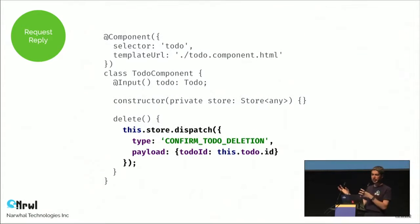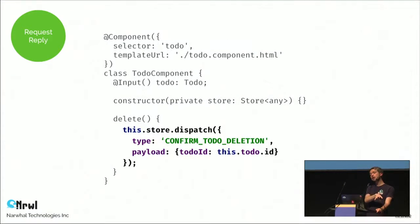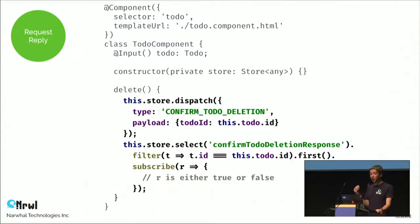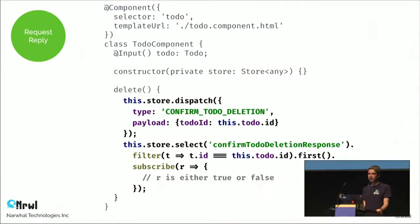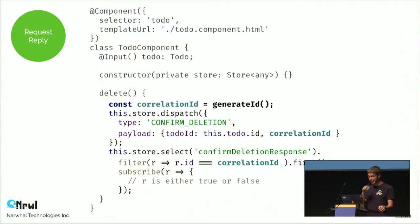In reality, some effects class will pick up the action, change the URL, display another component, and at some point store the result — that Boolean — in the state. Because any non-local state is stored in the store. After dispatching, we use 'select' to query the subset of application state, using the to-do ID to find the right response. IDs used in this fashion are called correlation IDs — we use them to correlate requests and replies. An entity ID like a to-do ID works well for this, but when it doesn't, we can generate a synthetic one.